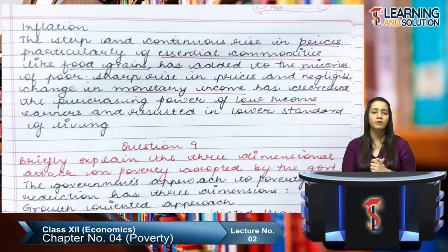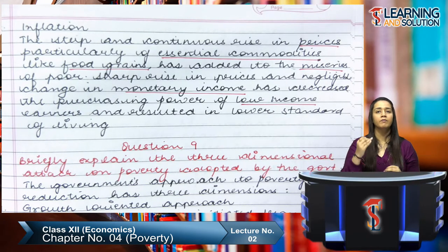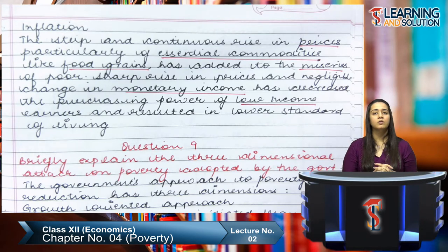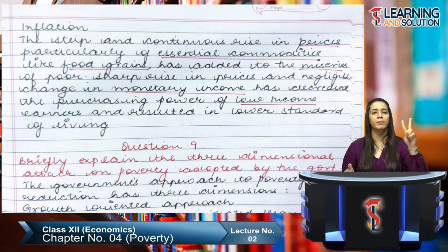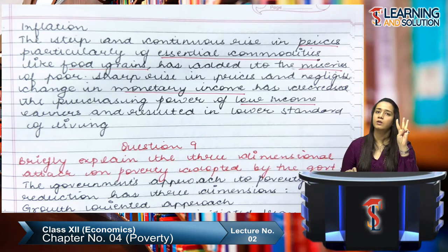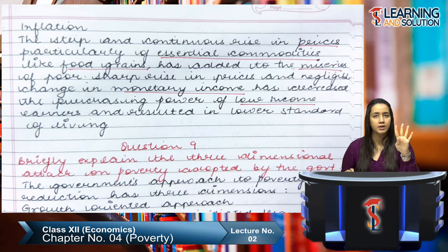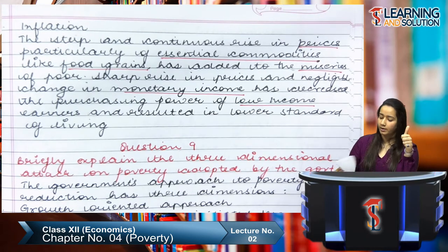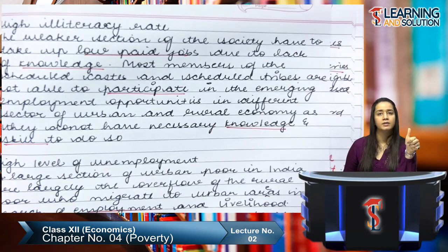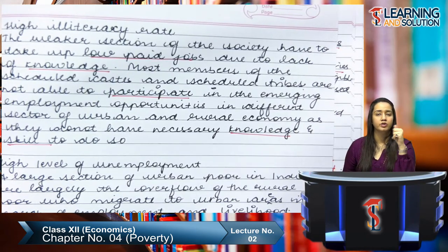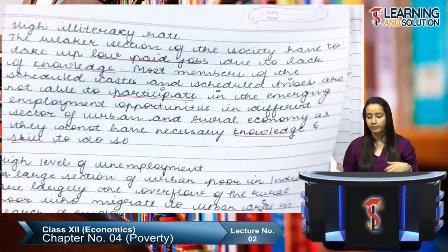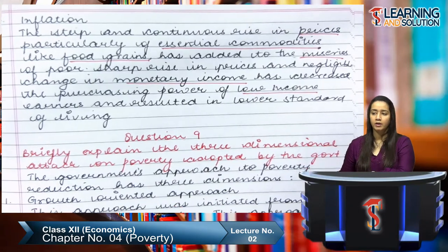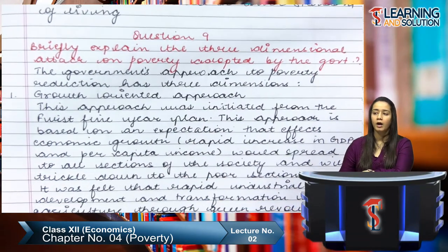Now let's revise the causes of poverty — please pause the video and repeat them: first, population explosion; second, low level of economic development; third, poor state of agriculture; fourth, high level of illiteracy; fifth, high level of unemployment; sixth, high level of indebtedness; seventh, inequality in the distribution of assets; and eighth, inflation. These are the eight causes of poverty — the reasons why the poverty rate was increasing.